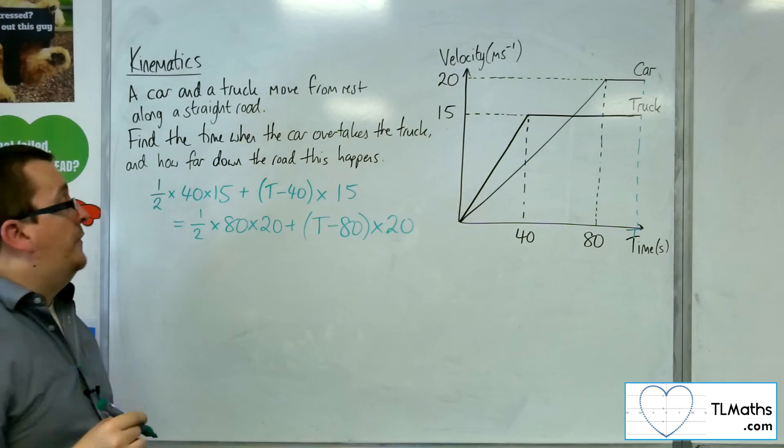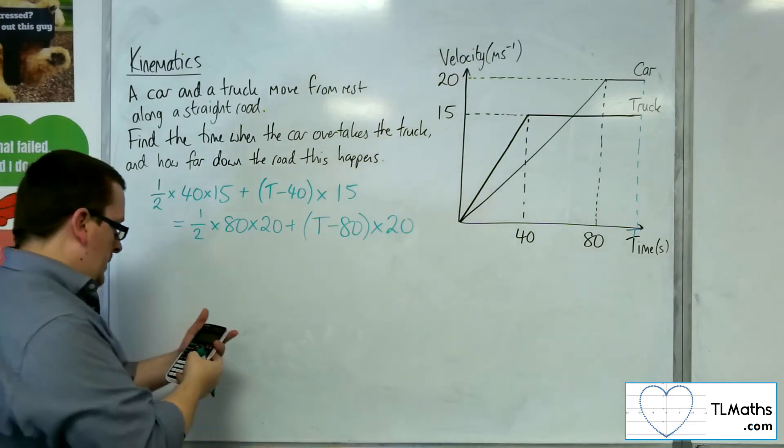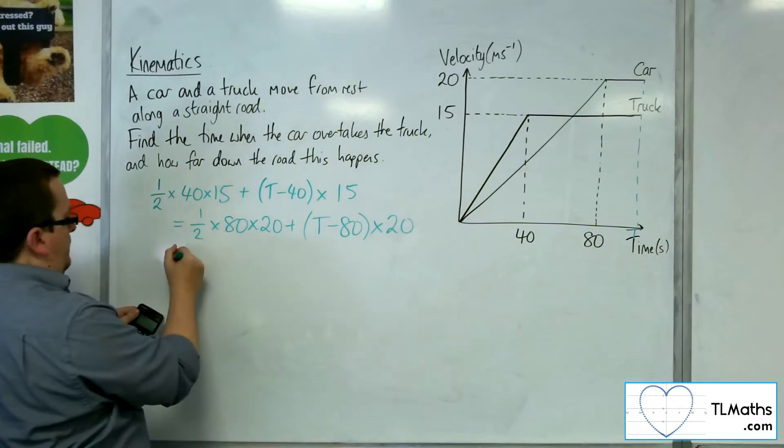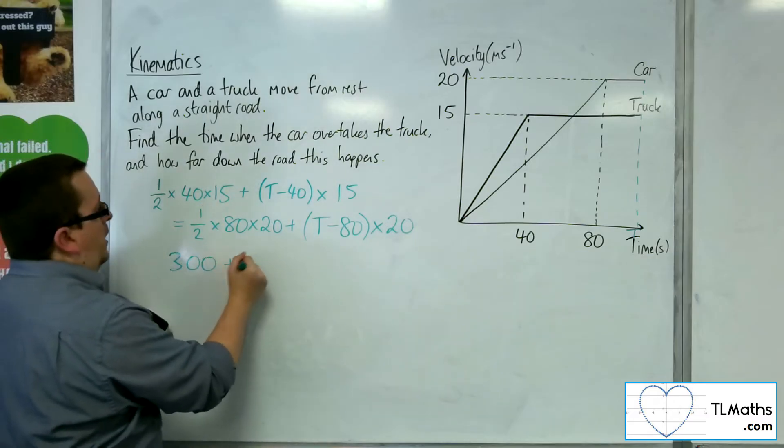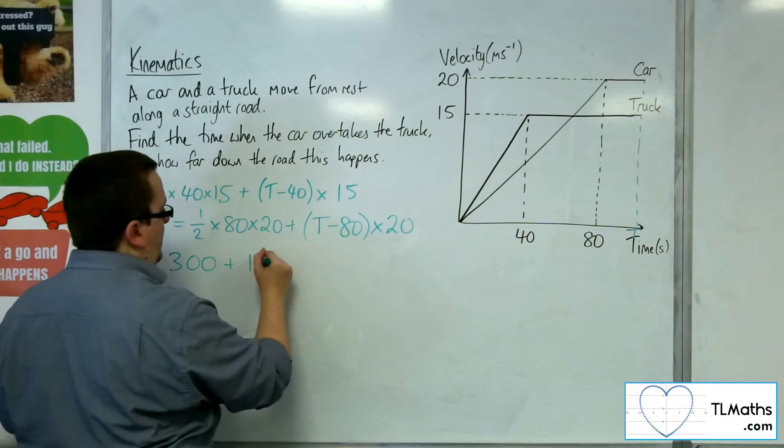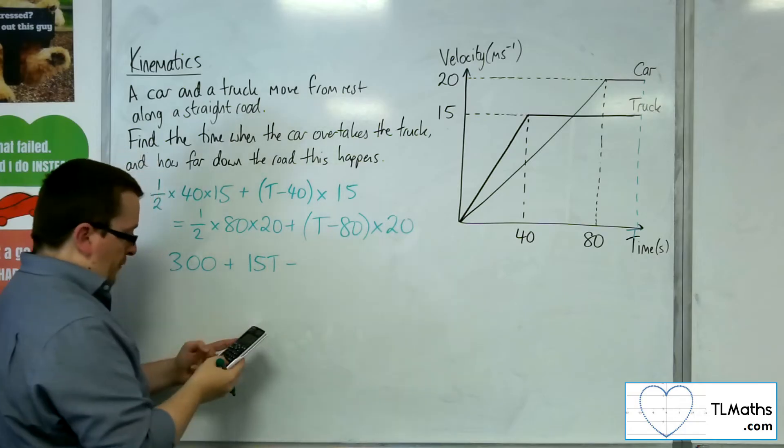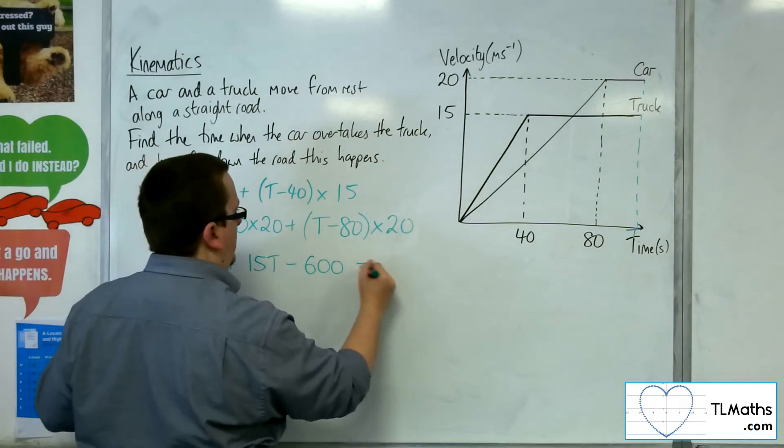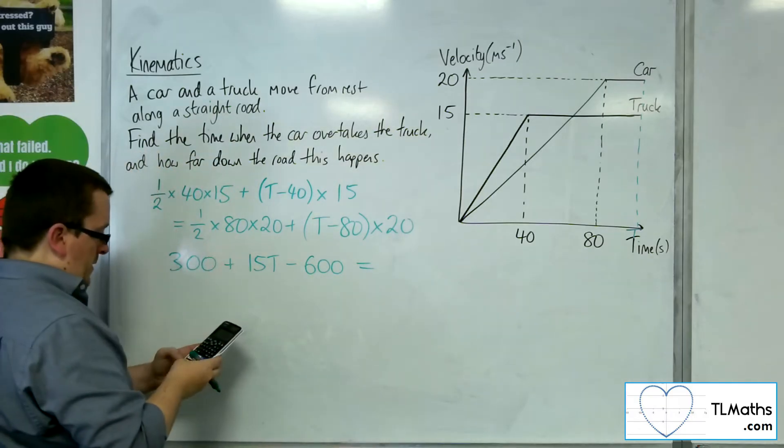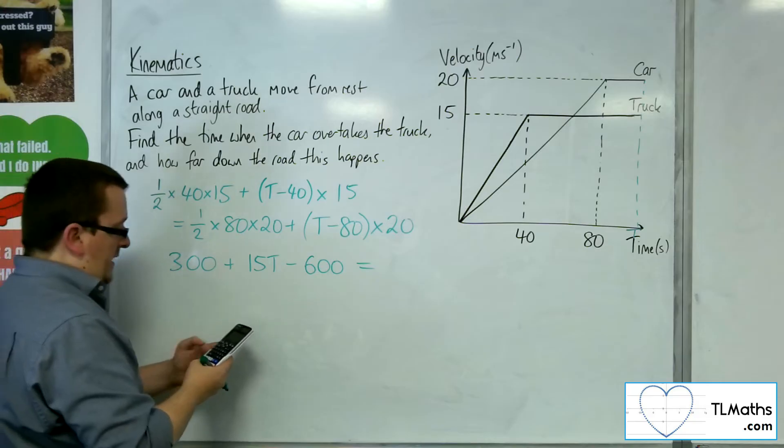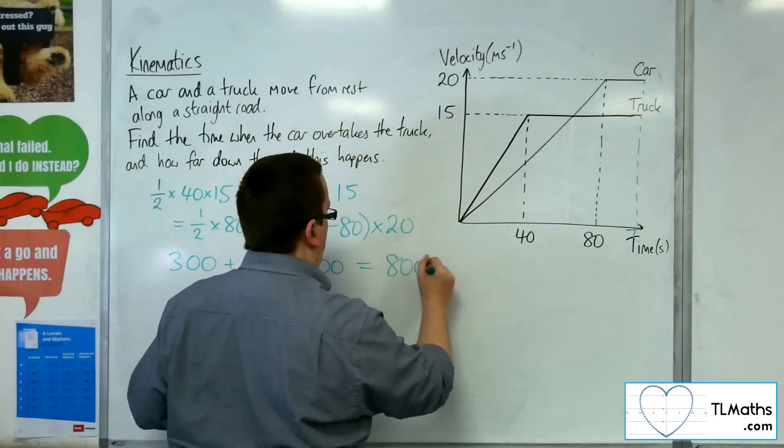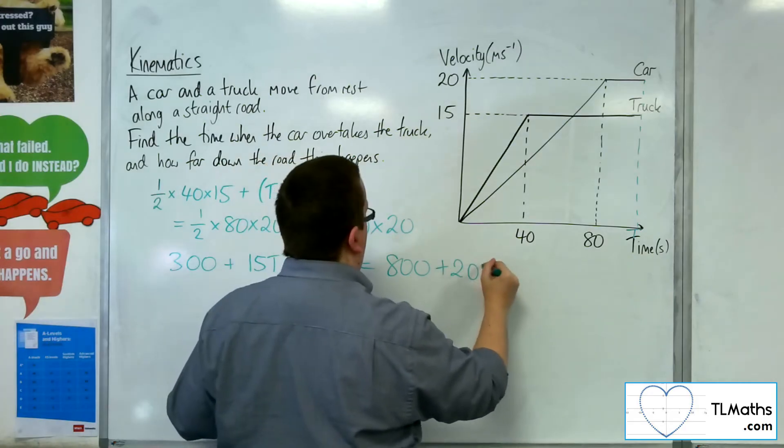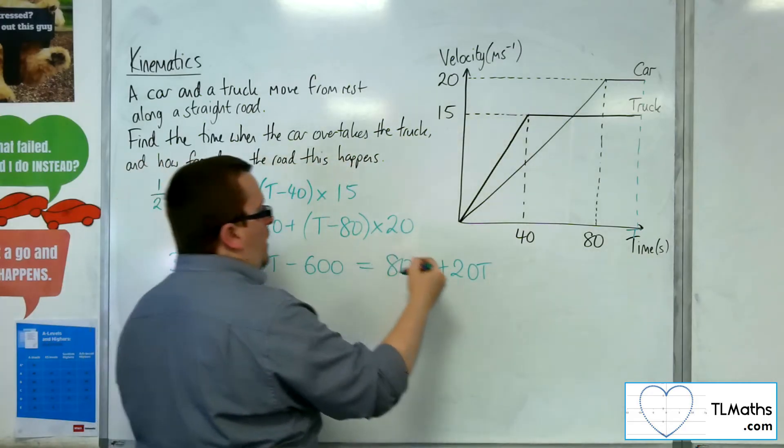So I need to solve this equation. I've got 1/2 times 40 times 15, so that's 300. I'm going to multiply that bracket, so 15T, and then we've got 40 times 15, so take away 600. And then we've got 1/2 times 80 times 20, so 800, plus expanding that bracket, 20T, take away 1,600.